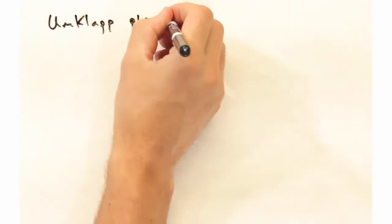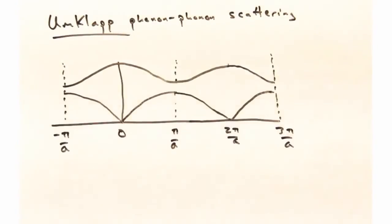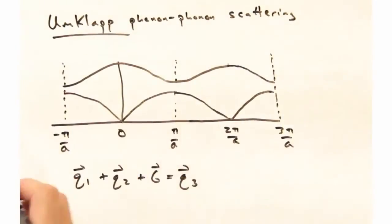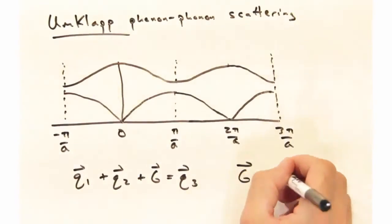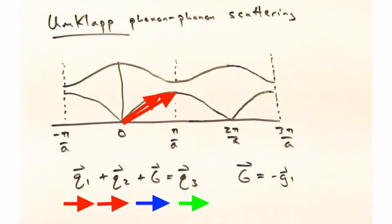Now let's take a look at umklapp scattering. I'm going to show not only the first Brillouin zone, but I'm also going to show that zone repeated to the right, out to 3 pi over a. And let's consider two phonons coming in, Q1 and Q2, plus some reciprocal lattice vector g that you're required to bring the phonon back into the first Brillouin zone. That's going to give us a new phonon Q3, where energy is conserved, but crystal momentum, as you can tell, is not conserved.